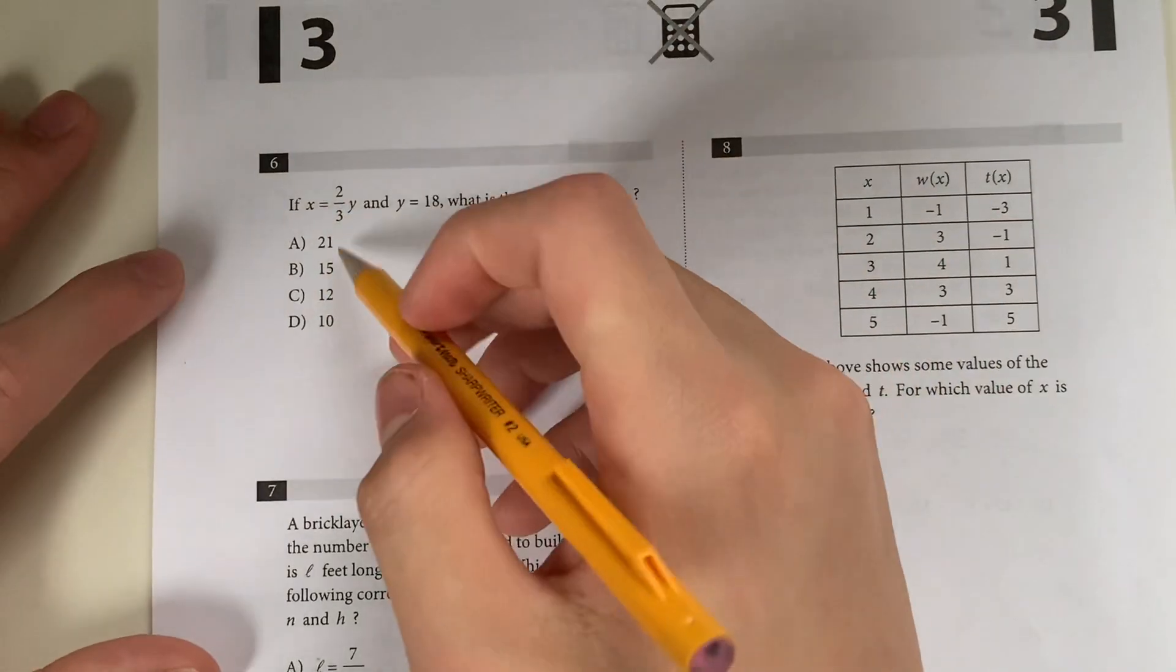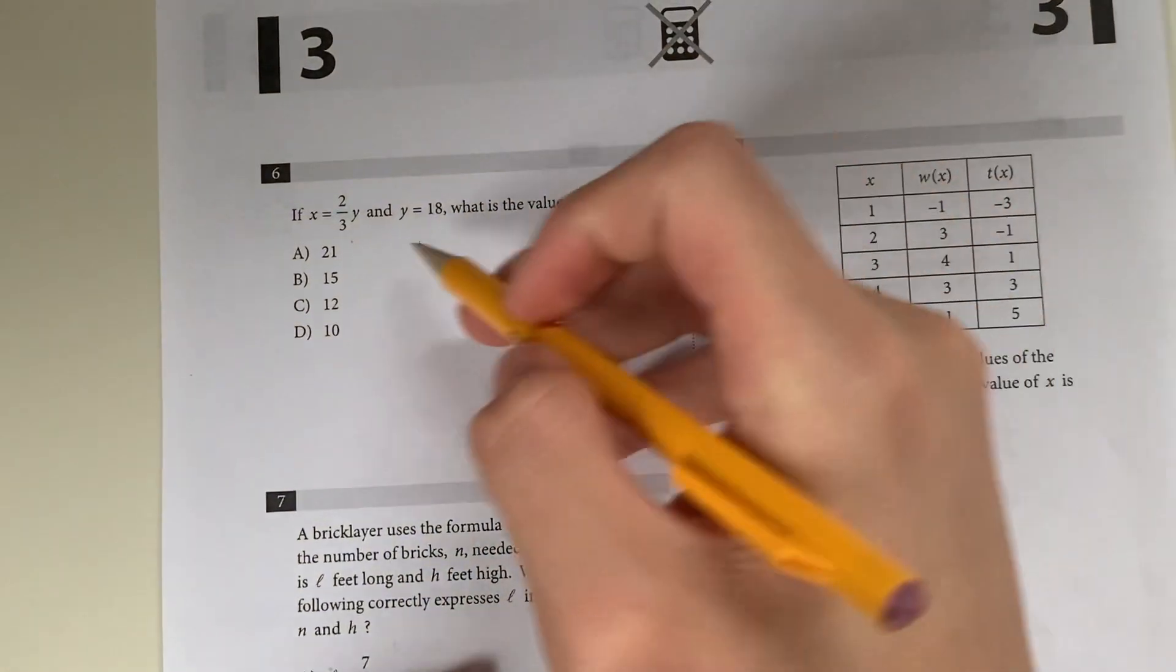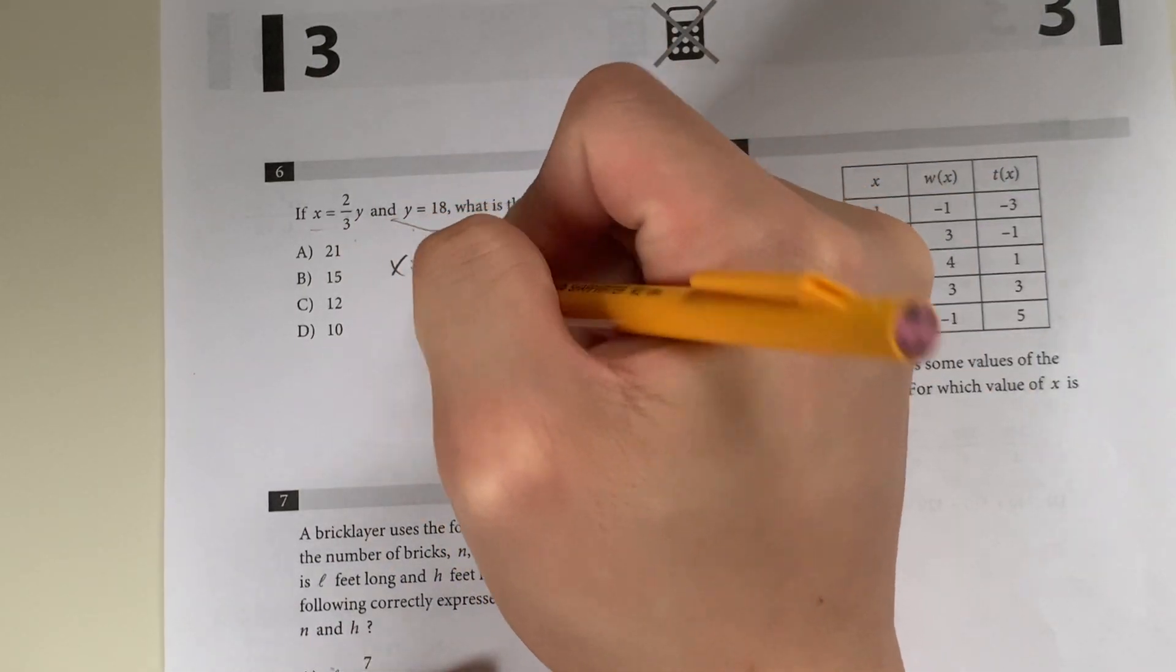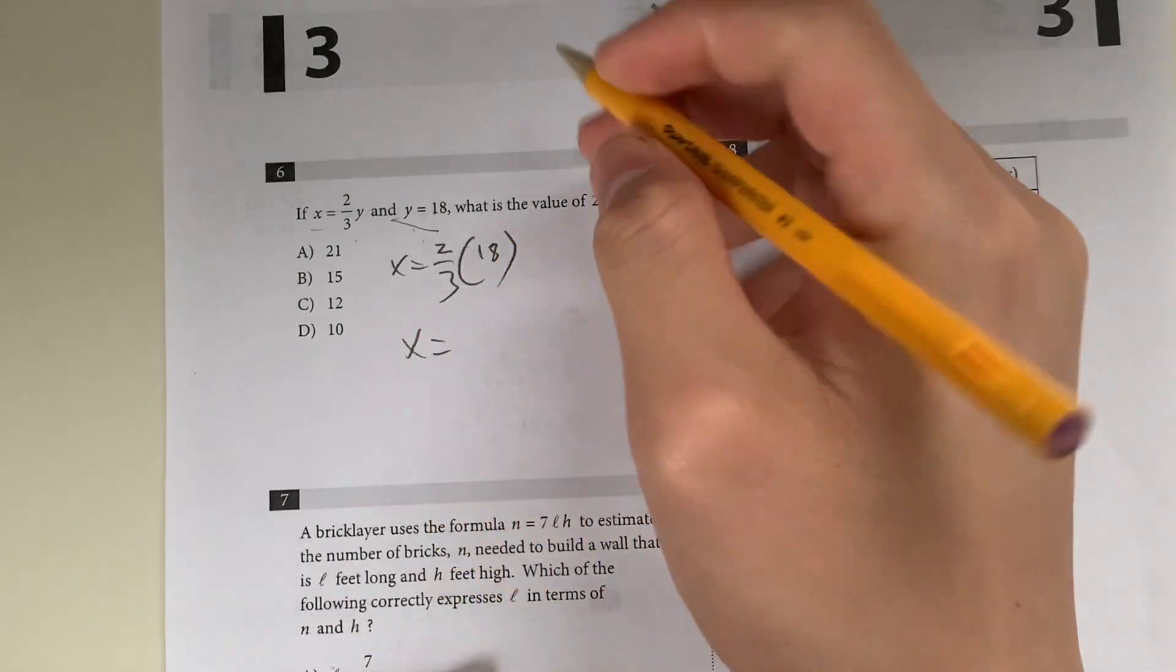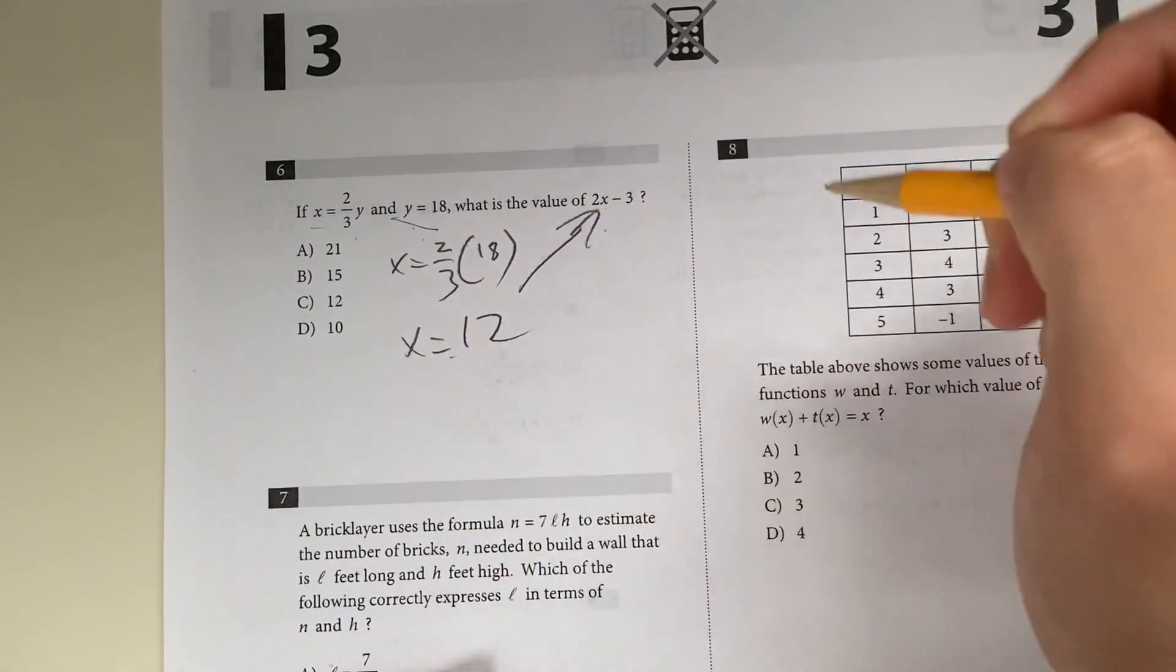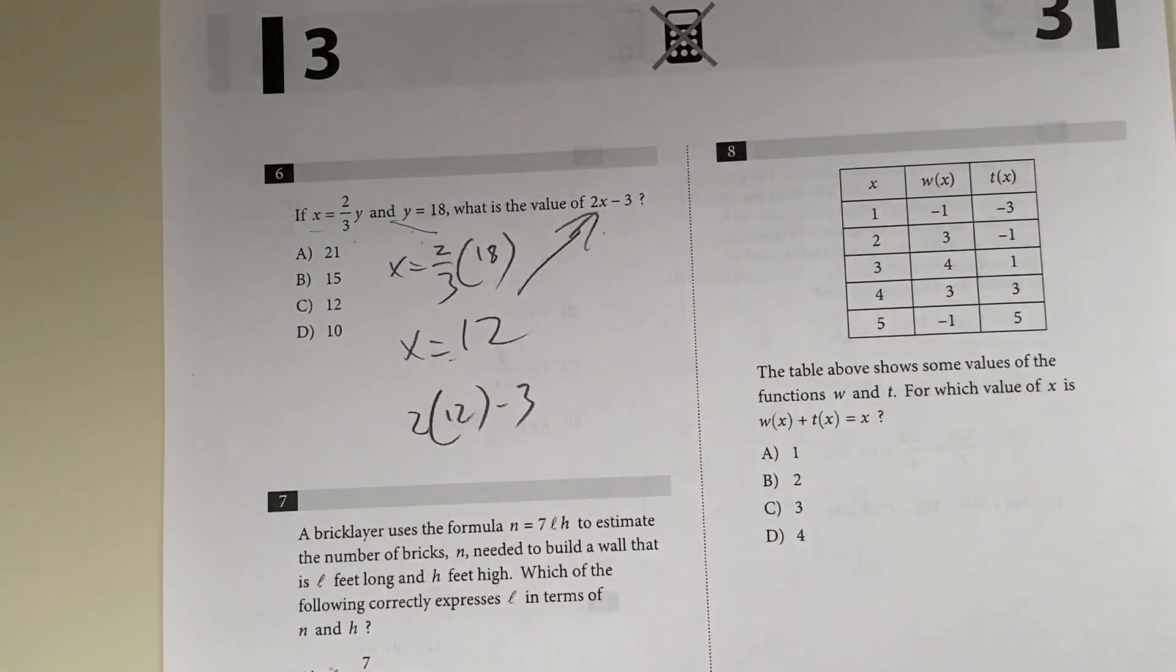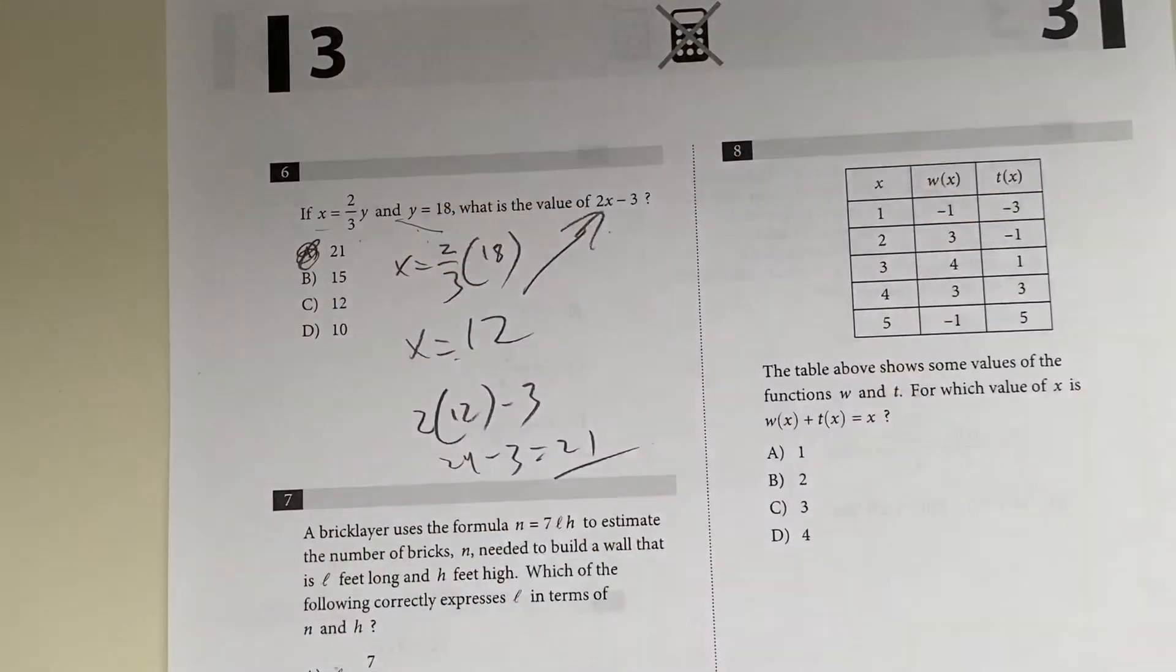Question 6. If x equals 2 thirds y, and y equals 18, what is the value of 2x minus 3? Let's solve for x given y. Plug it in. x equals 2 thirds times 18, and 2 thirds of 18, x equals 12. Now we know the value of x. 2 times 12 minus 3. 2 times 12 is 24, 24 minus 3 is 21, giving you an answer of D.